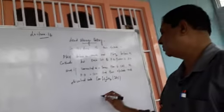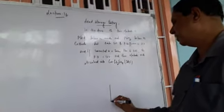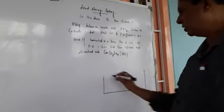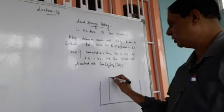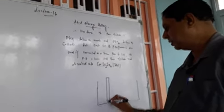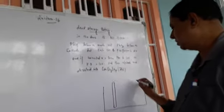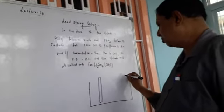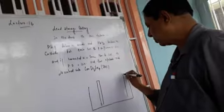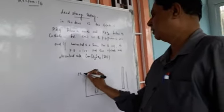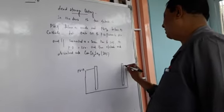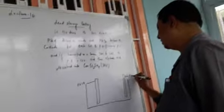In the construction of lead storage batteries, these are the secondary cells where the two electrodes — one behaves as anode and the other behaves as cathode. The anode is lead and the cathode is lead oxide.